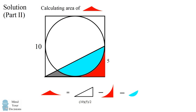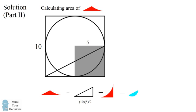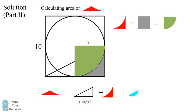What about the piece in the lower right-hand corner? We can solve this by subtraction. We'll consider one quarter of the square, which has a side length of 5, then subtract out one quarter of the circle. This square has a side length of 5, so its area is 25. The circle has a radius of 5, so one quarter of the circle is pi times 5 squared divided by 4. So this piece equals 25 times (1 minus pi over 4).